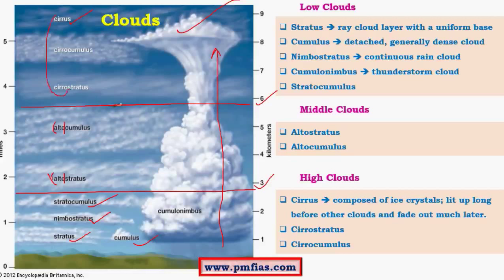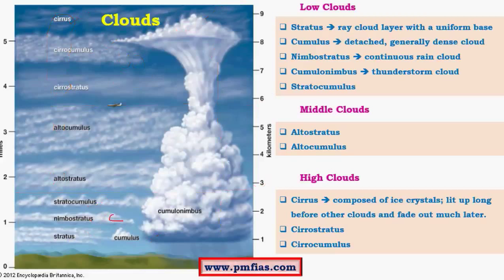Cirrus clouds are part of the higher cloud category. Cumulus clouds are accumulated in the form of heaps of cotton — a heap-like structure. Stratus clouds are formed in layers, one above the other. When stratus clouds form at lower levels they are called simply stratus; at upper levels they are called cirrostratus; and at middle levels they are called altostratus. Cumulus clouds occur at all three levels: cirrocumulus in the upper layers, altocumulus in the middle layers, and cumulus in the lower layers. The most important ones are cumulonimbus for their rain-bearing effect and nimbostratus.